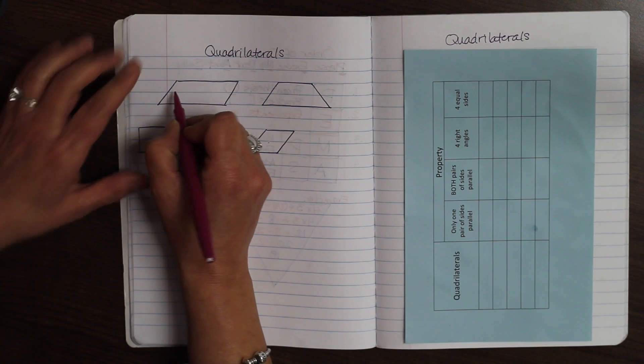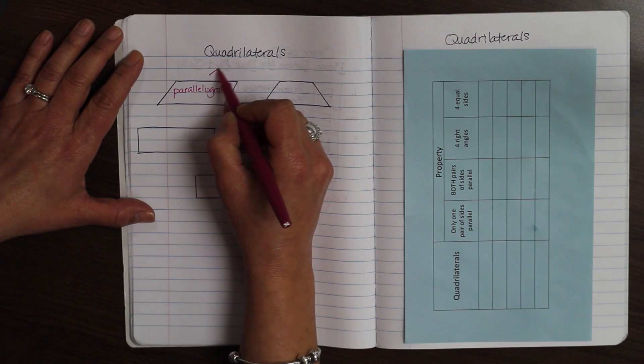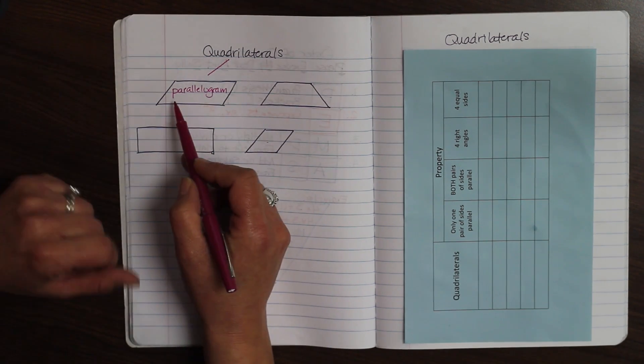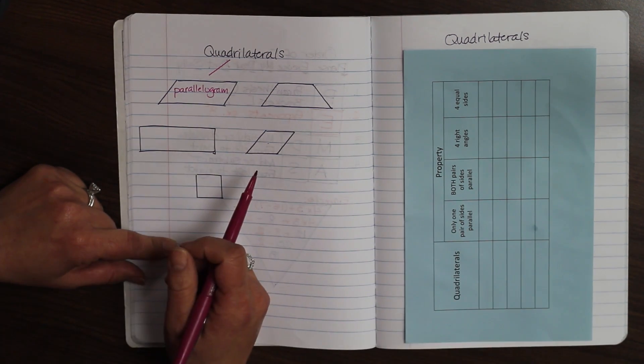The first one right here is a parallelogram. And a parallelogram is a quadrilateral because it has four sides. That's one of the attributes, and we're going to talk about more attributes on the other side.